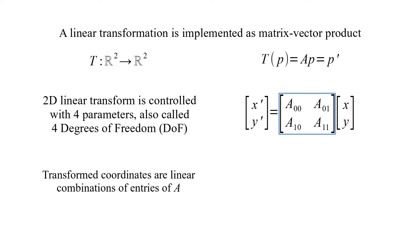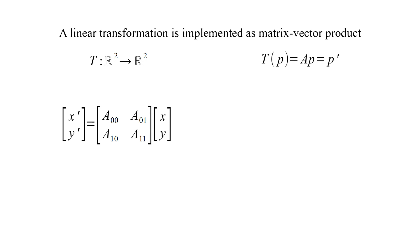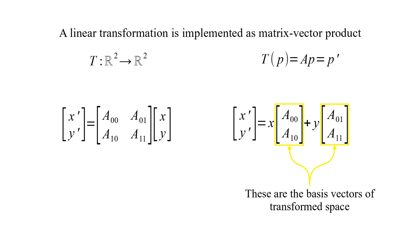Transformed coordinates are linear combinations of entries of A. And zero vector origin is mapped to zero vector. This equation can also be expressed in this form. From this equation it can be seen that the columns of A are the basis vectors of transformed vector space.